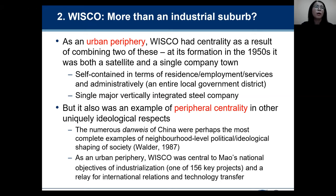For Wisco, as an urban periphery, it had centrality as a result of combining two types at its formation in the 1950s. It was both a satellite and a single company town — self-contained in terms of residence, employment, services, and administratively — and also a single major vertically integrated steel company. China has a very unique danwei system. There are numerous danwei work units in China, perhaps the most complete examples of neighborhood-level political and ideological shaping of society. The social-spatial organization of China is organized by danwei, and it's still very central to China.